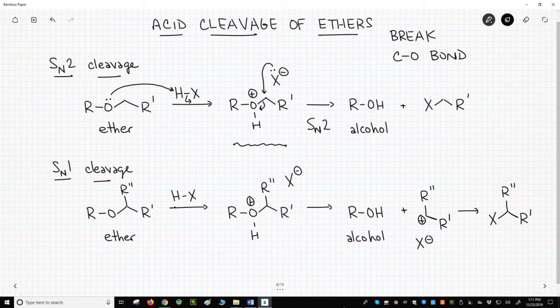The bottom pathway shows, in the middle, a protonated ether. It's possible that our leaving group might leave to form a carbocation and our alcohol. The counter ion might attack the carbocation, and then we would have broken the CO bond through an SN1 pathway.